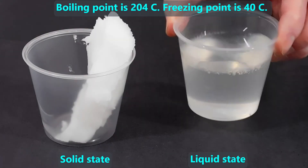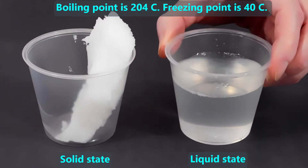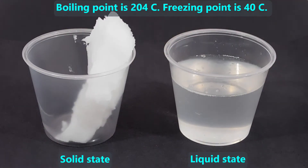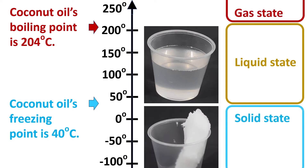Here is the last example on diagramming a state of matter, this time using coconut oil. We are given values for its boiling point and freezing point. We make a vertical number line, add the boiling and freezing points, draw a box to show where the liquid state is, draw a box to show where the solid state is, and draw a box to show where the gas state is. Knowing how to diagram the states of matter can be a useful way to visualize the states of matter when we are asked to compare different examples of matter, as we will show next.